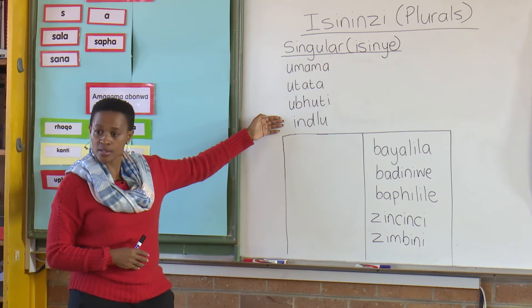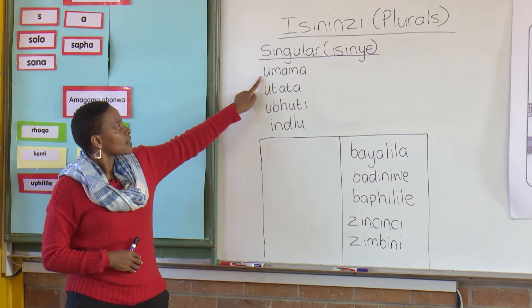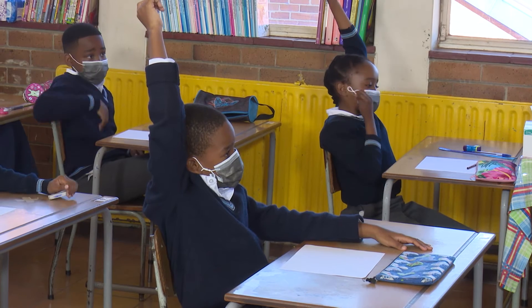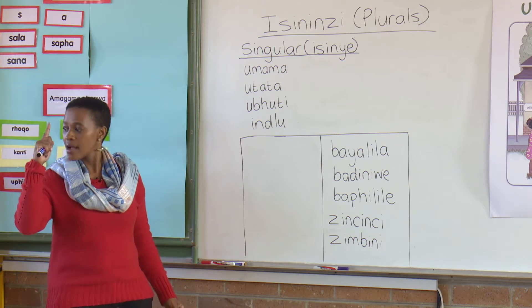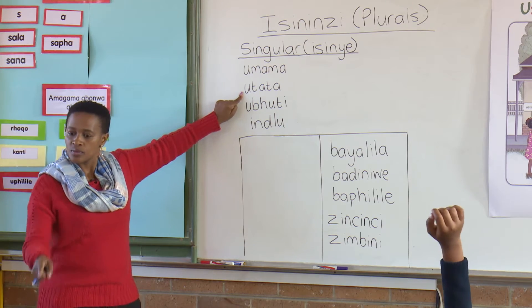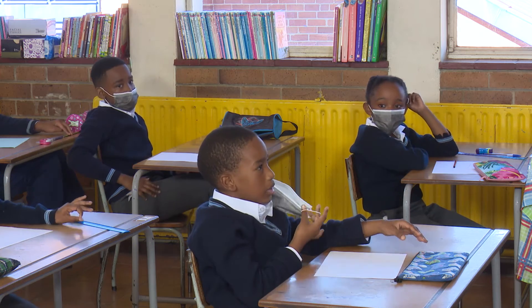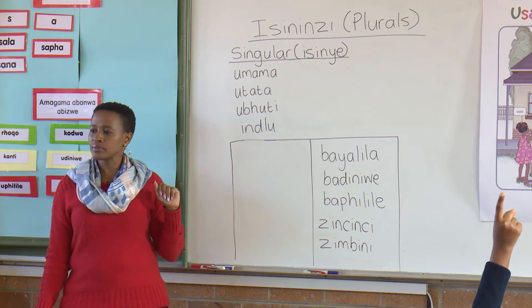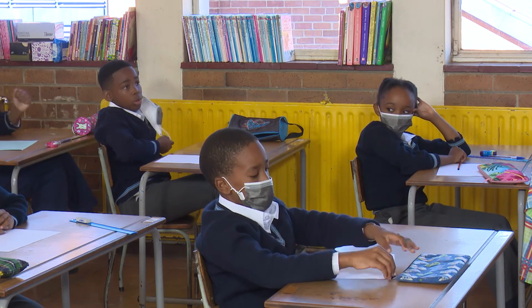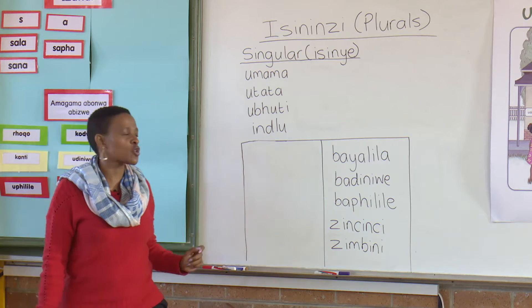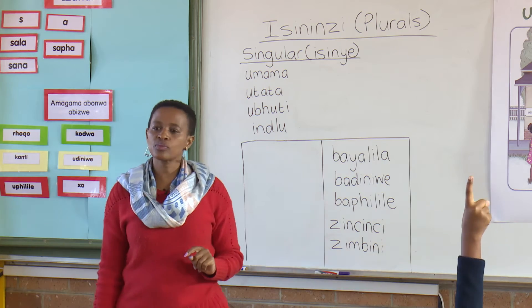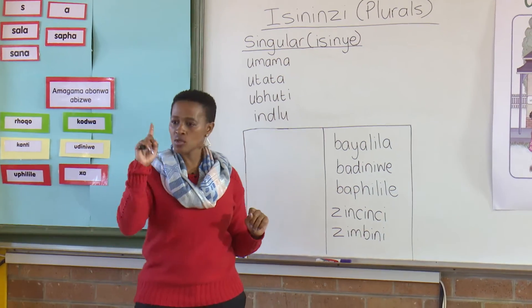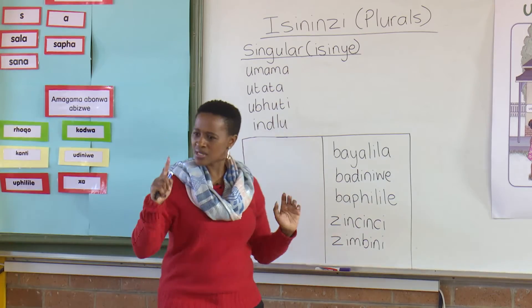So let's look at the words we have learned in our story. This word, umama — who can tell me what this word means in English? It means mother. One mother. Utata means father. Uputi means brother. Inju means house. All of these words just mean one person or one thing: umama, utata.